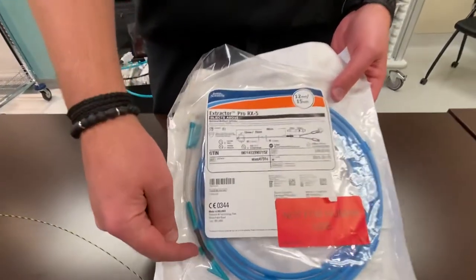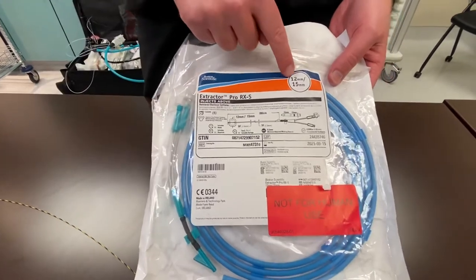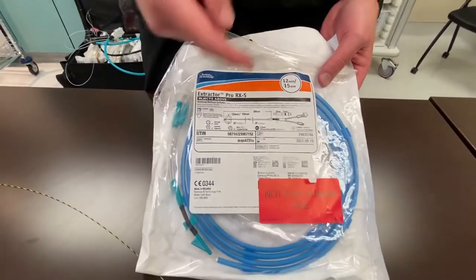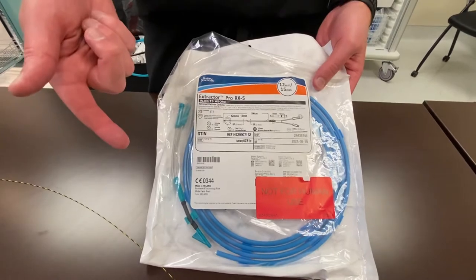The S means there's a stylet, and we'll get to that in a moment, but this is a 12-15. They come in 9-12, 12-15, and 15-18 millimeter sizes.